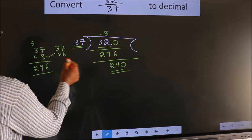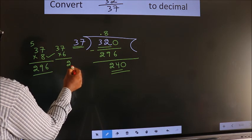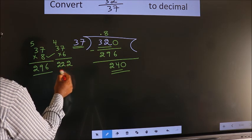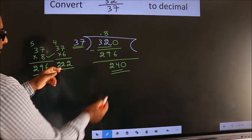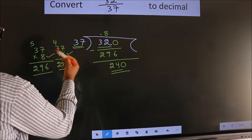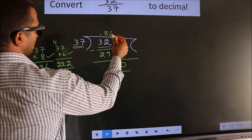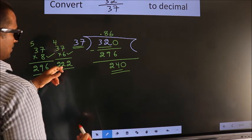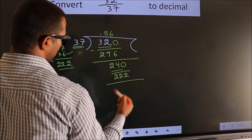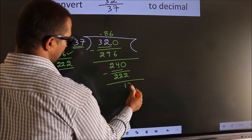In the 37 table is, let us check with 6. 37 times 6: 6 times 7 is 42, put 2 down, carry 4. 6 times 3 is 18 plus 4 equals 22. So 222, close to 240, so we go with 6 times. 37 times 6 is 222. Now we subtract, we get 18.